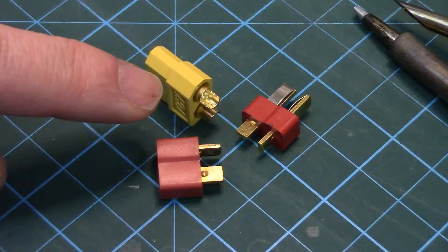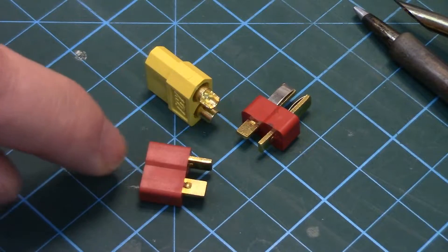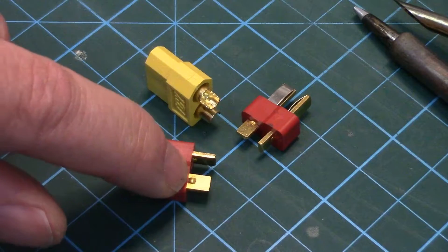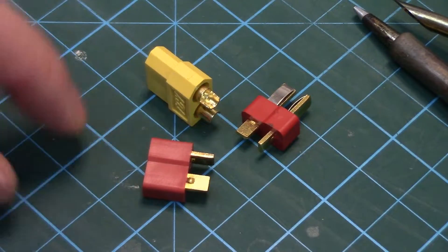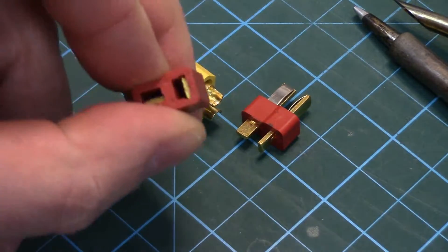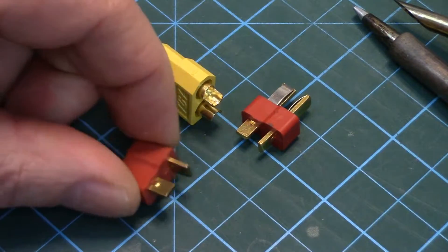Both solder up very similar. The XT60 has a little cradle you drop the wire into. These just have a flat tab. Some will say this is actually a little bit easier. The one thing though to be mindful of with Deans or T connectors, these are also called T for the orientation of the pins, it's kind of shaped in a T.